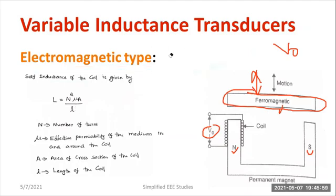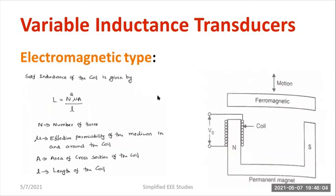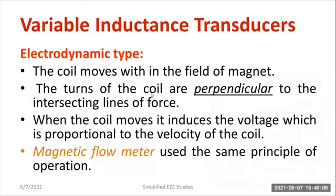This relation is applicable for electromagnetic type variable inductance transducer, so you can measure displacement, velocity, etc. Moving on to the second subclassification, electrodynamic type variable inductance transducer: the coil moves within the field of a magnet, and the turns of the coils are perpendicular to the intersecting magnetic lines of force.